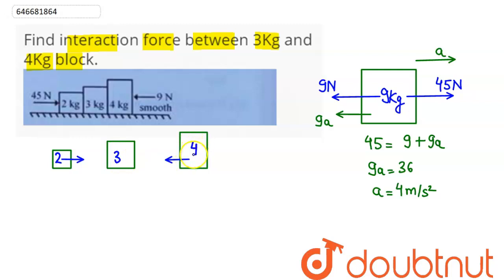So we can say here this mass is 2 kg, this mass here is 3 kg, and this mass here is 4 kg. This force is 9 newton, this force is 45 newton, and whole system will be accelerating towards right side with same acceleration of 4 meter per second square.